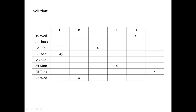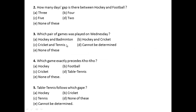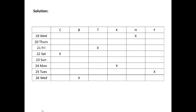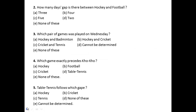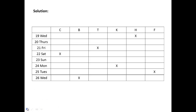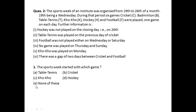Which game exactly precedes cocoa? Cocoa is played on Monday. There is no game on Sunday, so the preceding game is cricket played on Saturday — cricket is the answer. Table tennis follows which game? Looking at the table, table tennis is preceded by football, but none of the given answer choices match directly, so the answer is none of these. Please go through this set of questions again along with the table we drew.